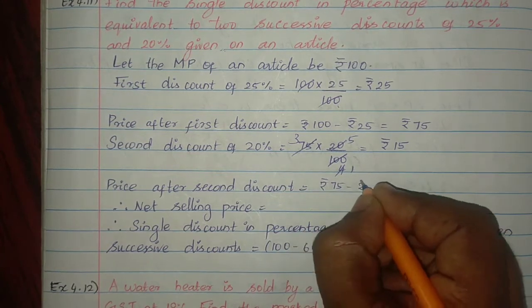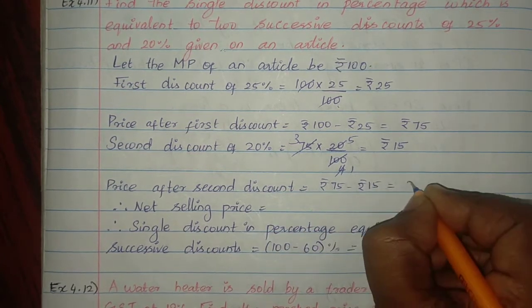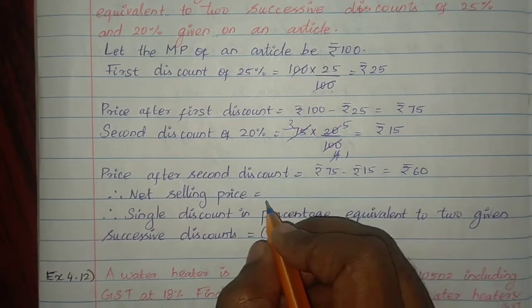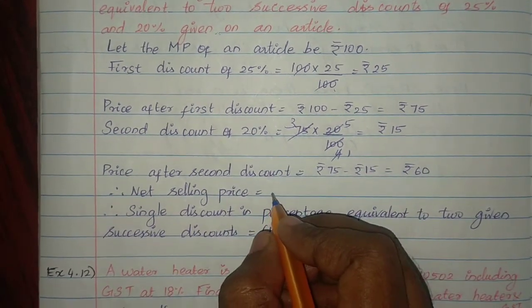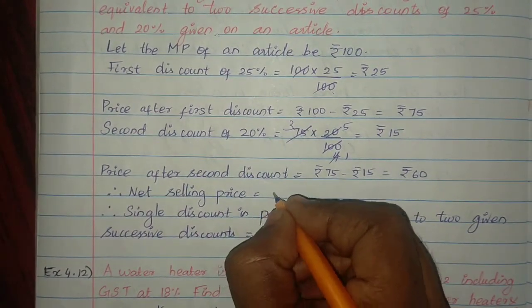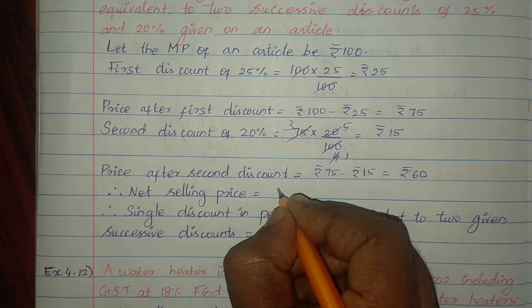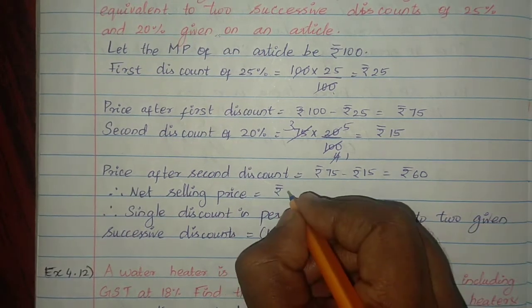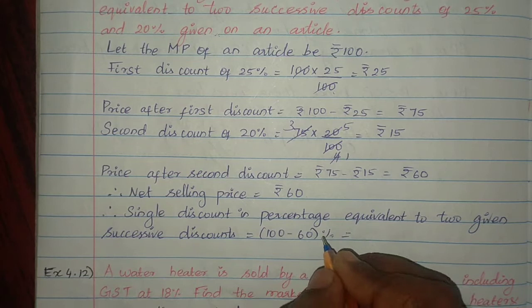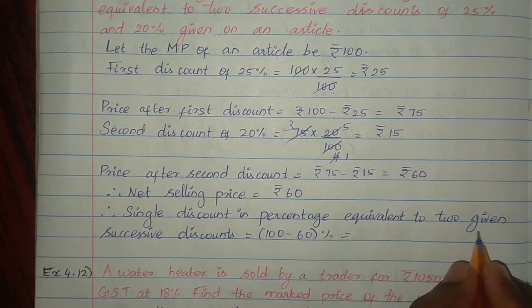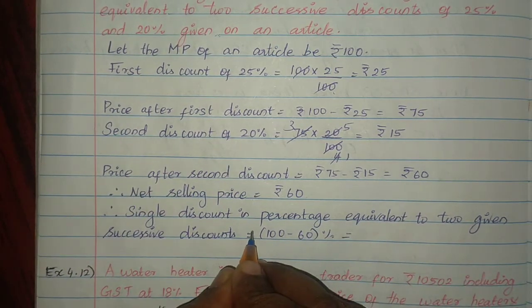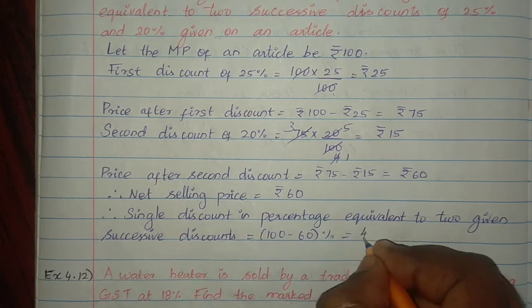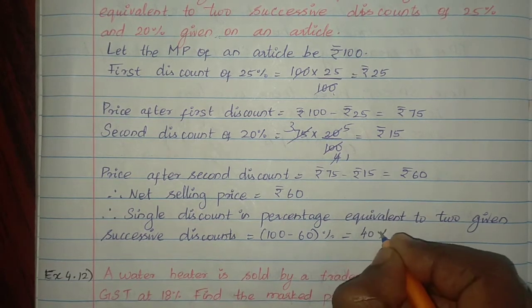After the second discount of 20% on Rs. 75: 75 into 20% equals Rs. 15. So Rs. 75 minus Rs. 15 equals Rs. 60. The net selling price is Rs. 60. Therefore, the single equivalent discount percentage is 100 minus 60 equals 40%.